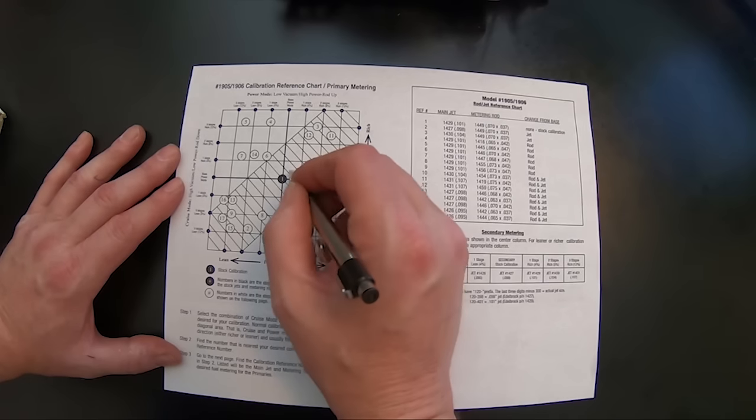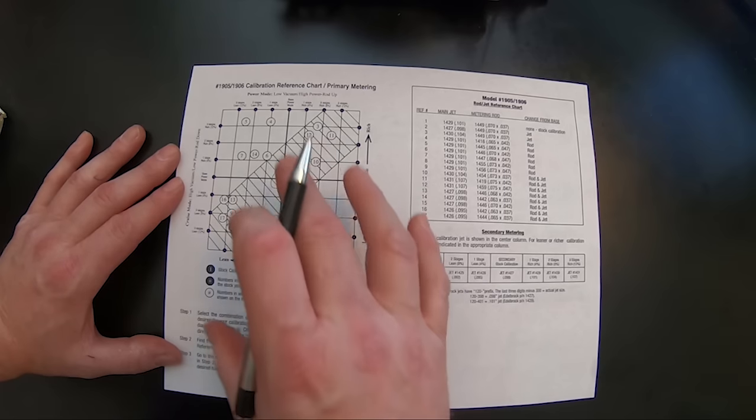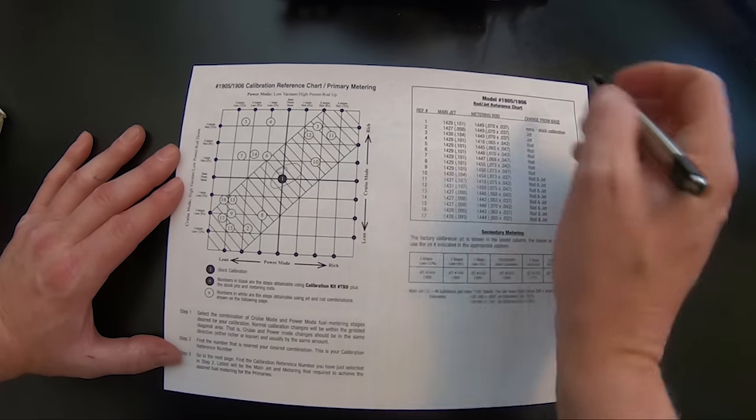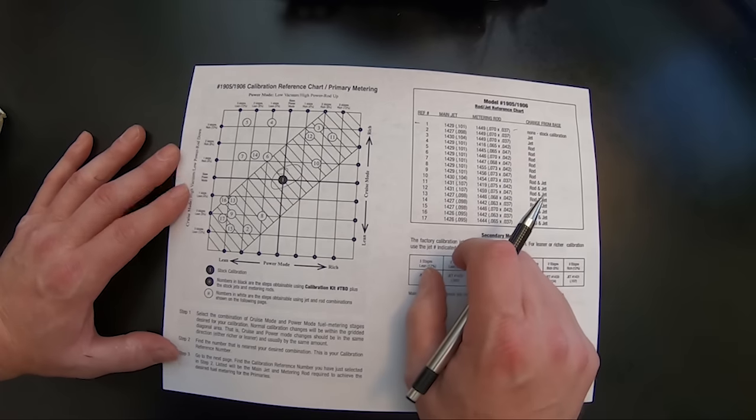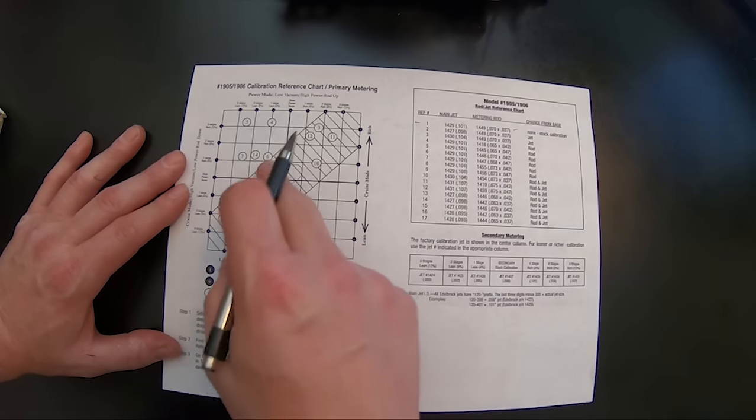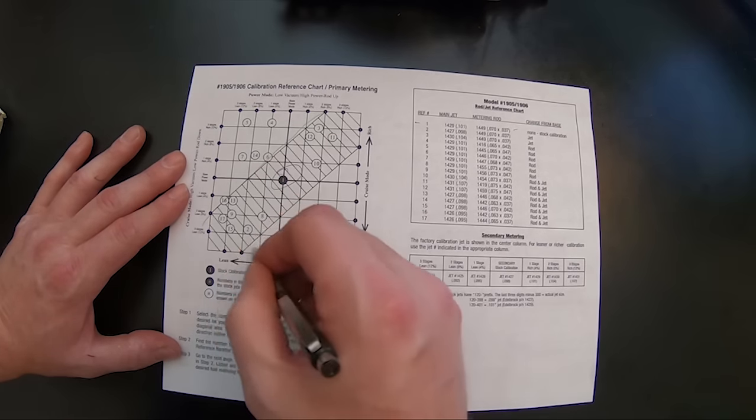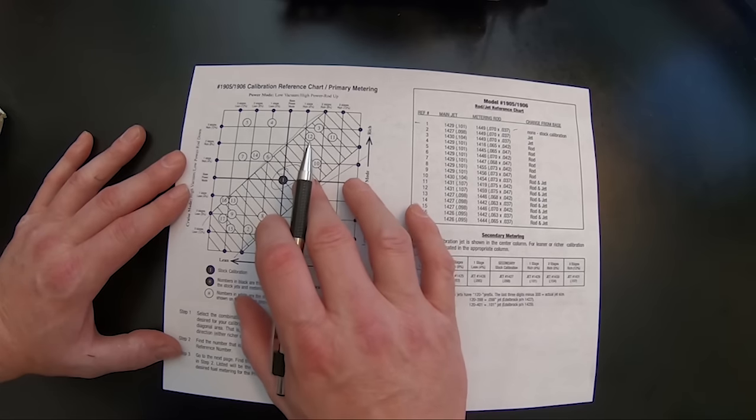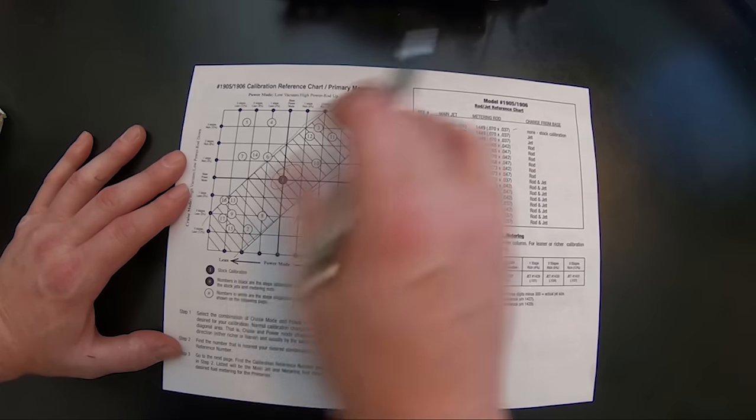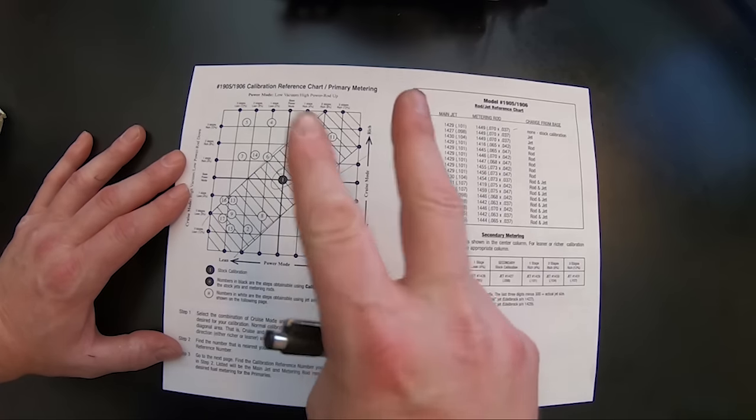This center one here, one, is the factory setting of what the carburetor came with. It'll tell you what the main jet is and what the metering rod is in it. This is your reference point. It's your starting point. This zone here in the kind of the shaded part here, this is kind of where the area that you want to be at as you're making adjustments with the carburetor.